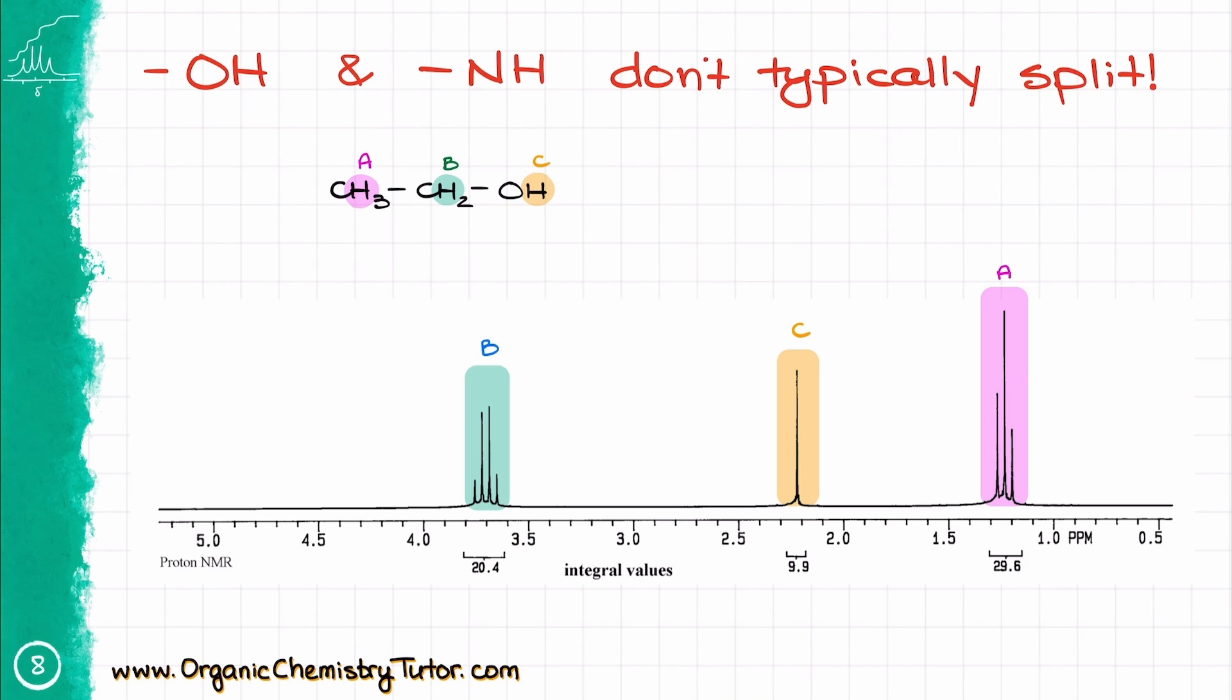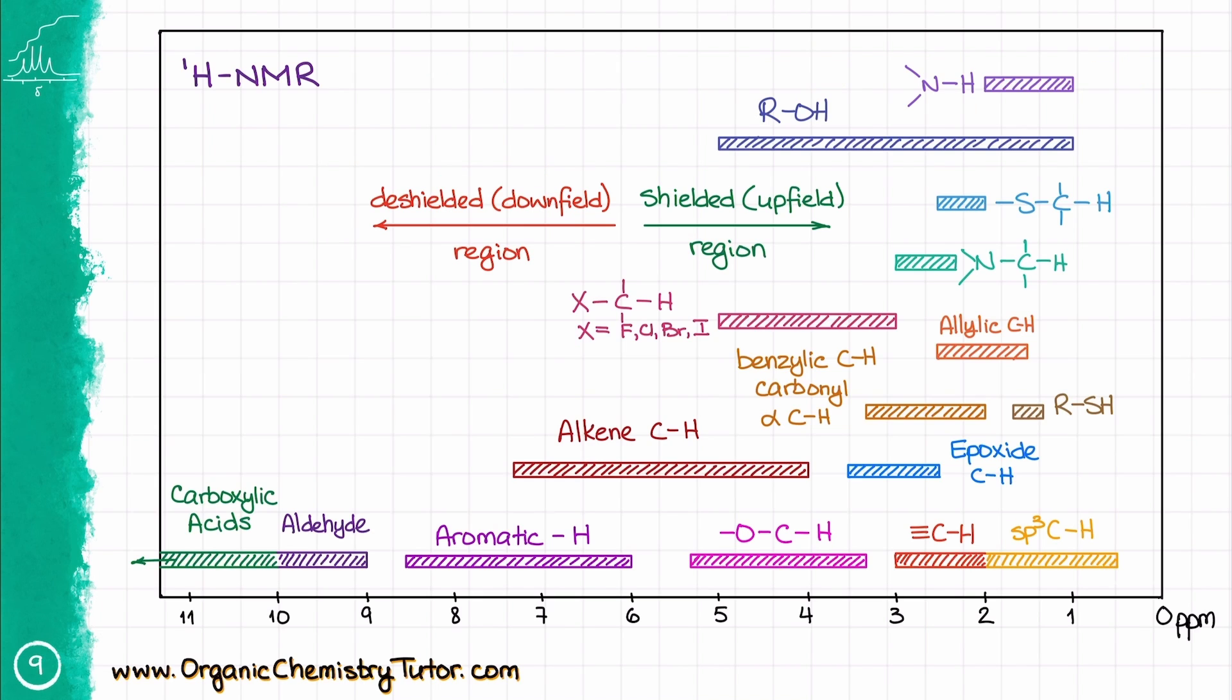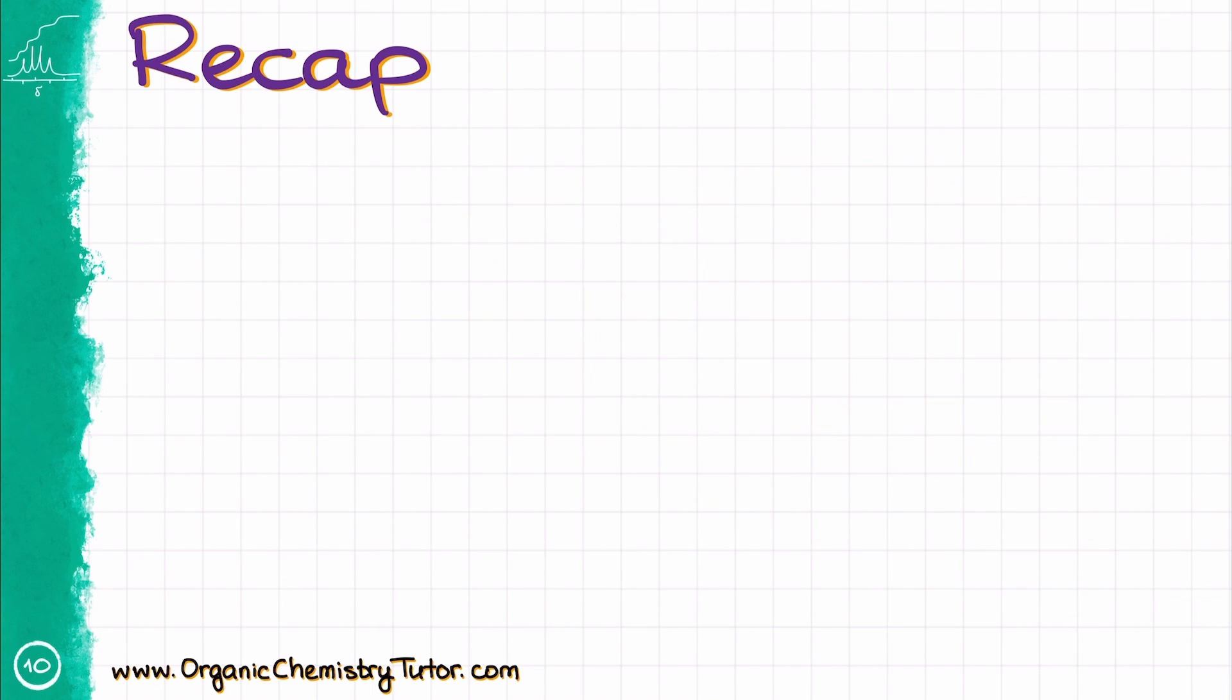And another annoying feature of the OH and NH groups is that they can appear at different places in the spectrum depending on the sample concentration, impurities, solvent we use, etc. And talking about the positions in the spectrum, or in other words, the chemical shift, you should also have a reference table for the H NMR just like what you have for the C NMR.